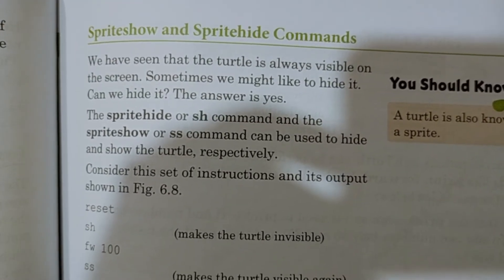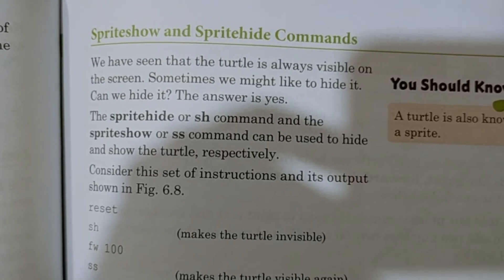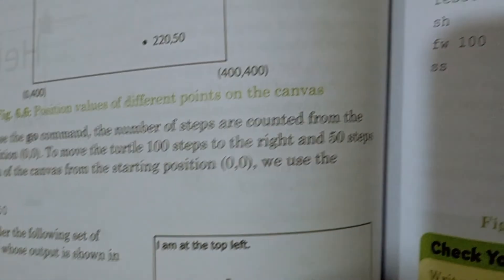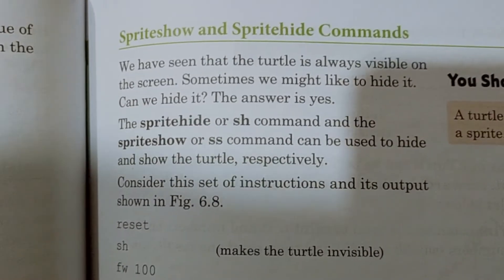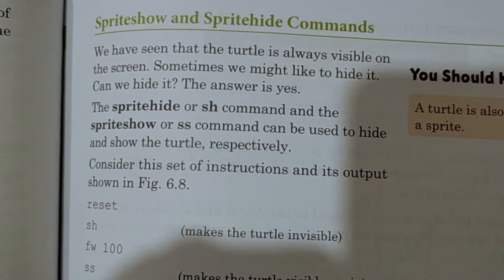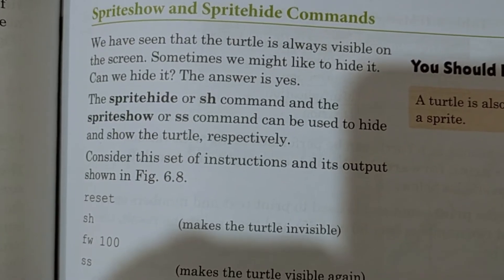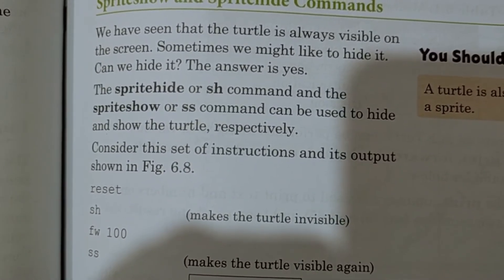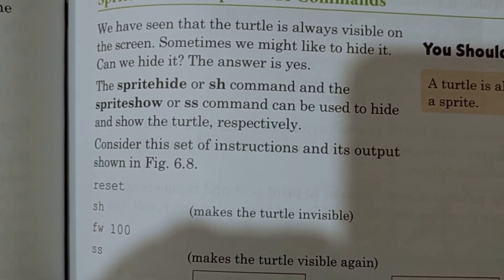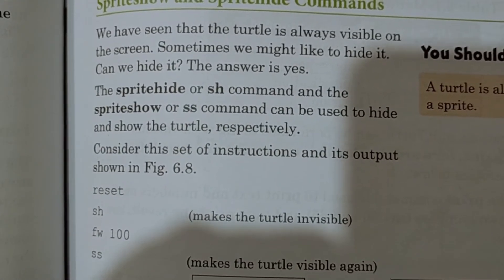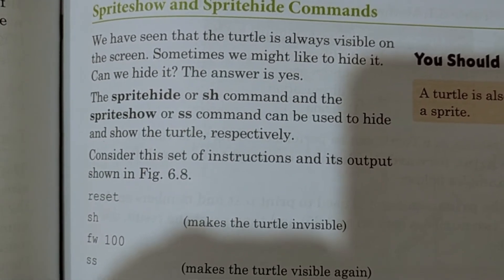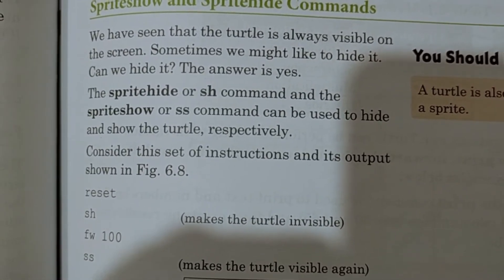Now we have the show and hide command. The turtle is always visible on the screen. Sometimes we might like to hide it — and yes, we can. The sprite hide or sh command and the sprite show or ss command can be used to hide and show the turtle respectively. If you use sprite hide (sh), the turtle will be hidden. If you use sprite show (ss), the turtle will be visible. A turtle is also known as a sprite.